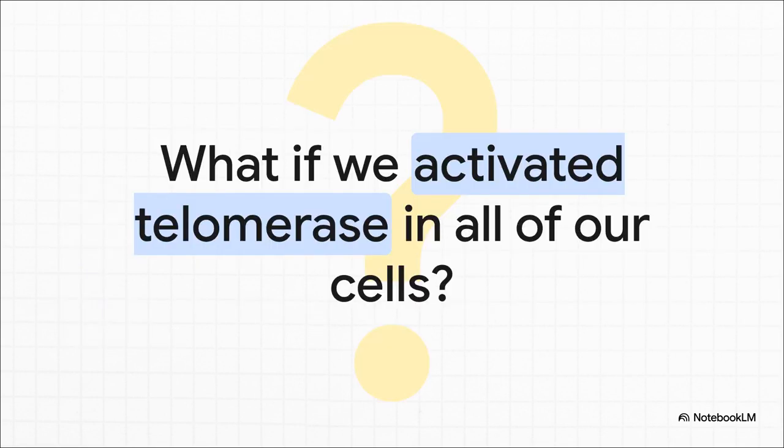This brings us to a final, really fascinating question. Telomerase activity is really high in our stem cells, which is part of what keeps them going. It's also turned back on in most cancer cells, which is what gives them their immortality. But in most of our normal cells, it's shut off, and this is linked to the process of aging. So it makes you wonder: what would happen, for better or for worse, if we could find a way to flip that switch and turn telomerase back on in all of our cells?